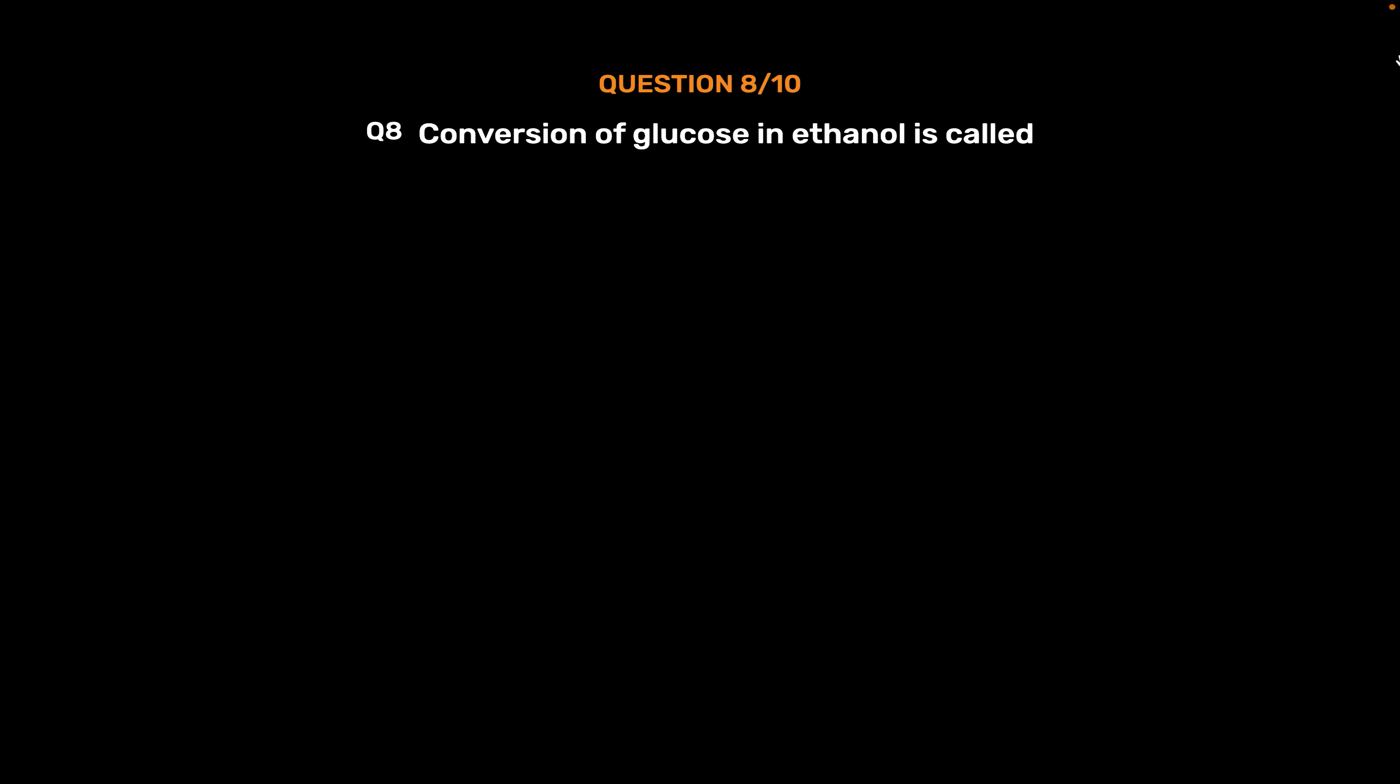Question number 8: Conversion of glucose to ethanol is called. Option A: Formulation. Option B: Fermentation. Option C: Conversion. Option D: Photosynthesis. The correct answer is Option B: Fermentation.